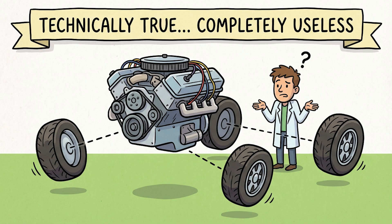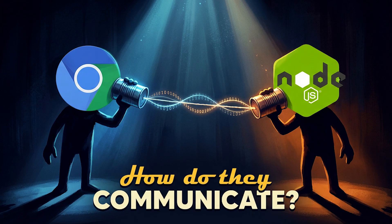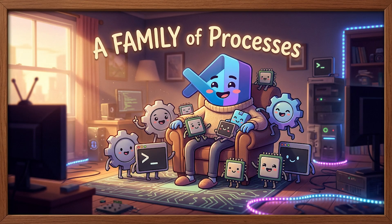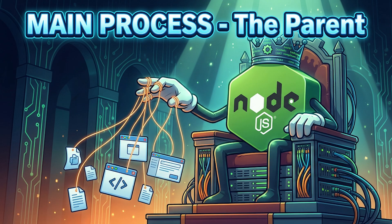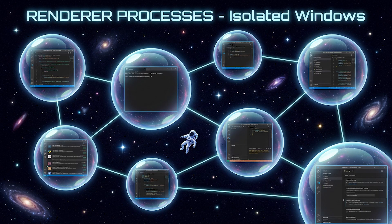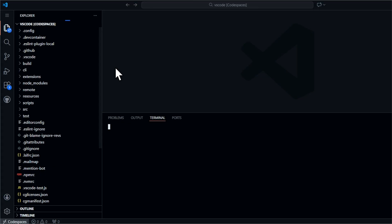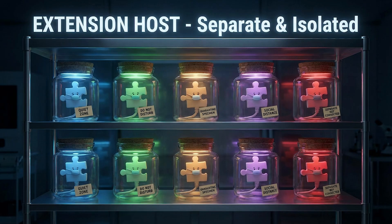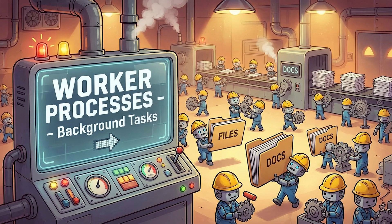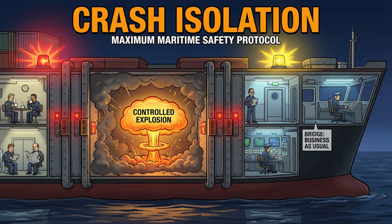Now here's where most explanations stop — they say Electron combines Chromium and Node, and move on. But that's like saying a car combines an engine and wheels: technically true, completely useless. The real question is how do these pieces actually talk to each other? When you launch VS Code, you're not starting one program — you're starting an entire family of processes. The main process is the parent: it runs Node.js, controls the application lifecycle, manages windows, and handles all the stuff that needs real computer access. Renderer processes: each VS Code window is its own isolated process — basically a browser tab that shows the UI. This is where you see your code, your sidebar, your terminal, and everything else. Extension host processes: your extensions don't run in the main window, they run in separate processes. Worker processes handle background tasks like searching files or parsing language features.